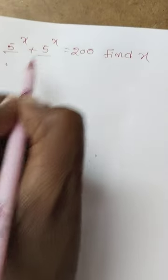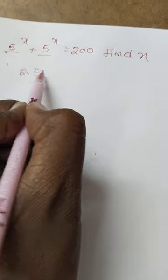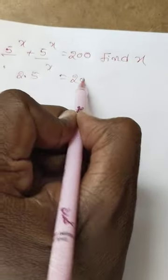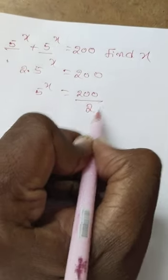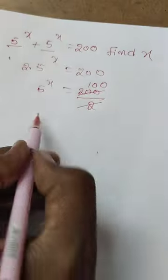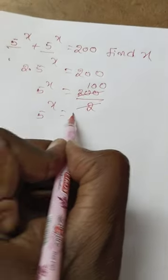Then take this one: 5 power x plus 5 power x equals 2 into 5 power x is equal to 200. 5 power x is equal to 200 by 2. This one will cancel. 5 power x is equal to 100.